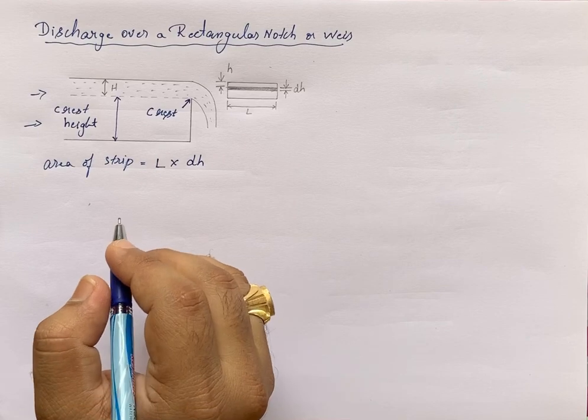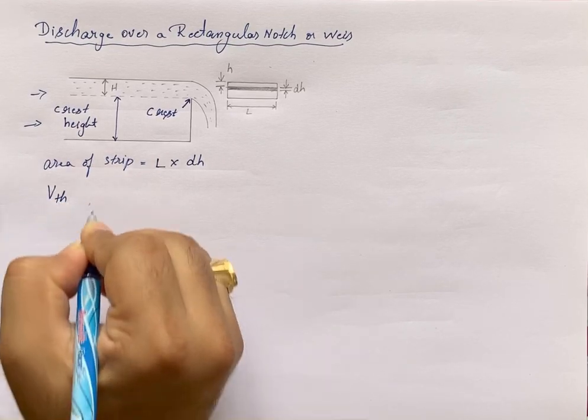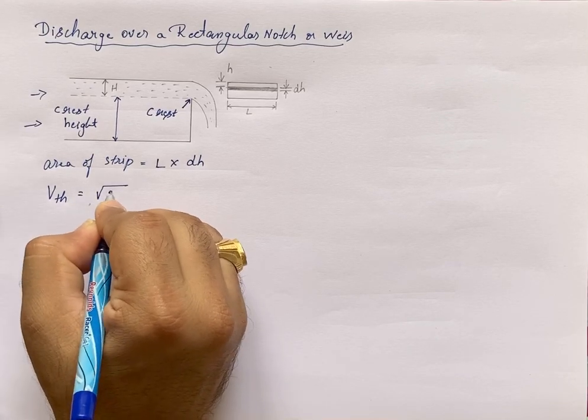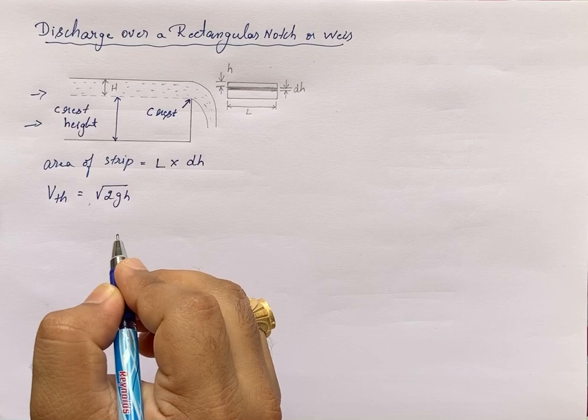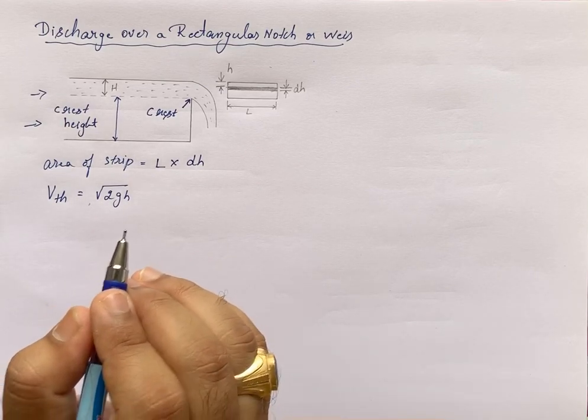The theoretical velocity of water, VTH, is given by √(2gH). This is the theoretical velocity of water through the strip.